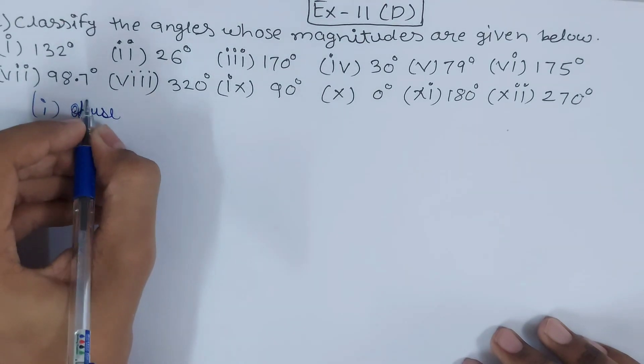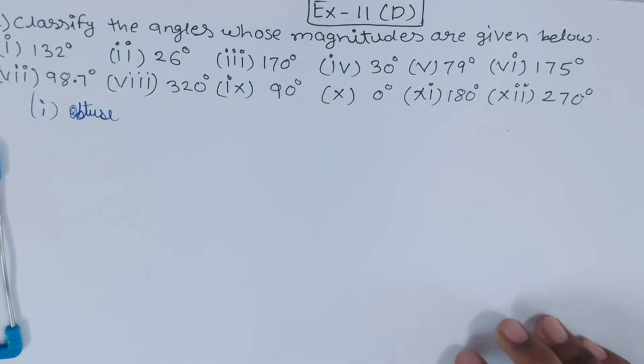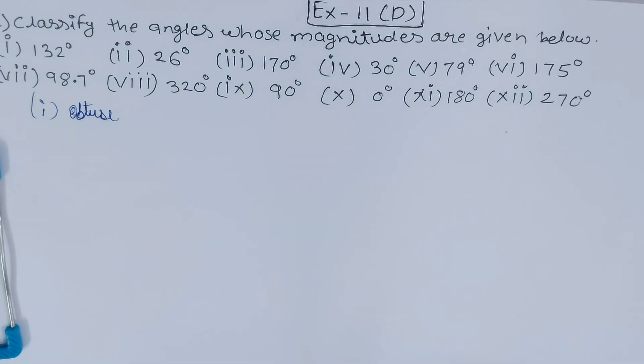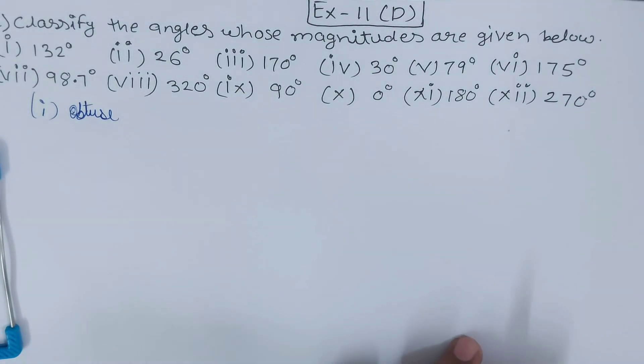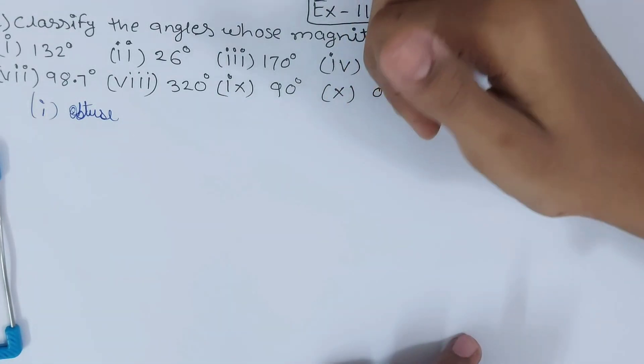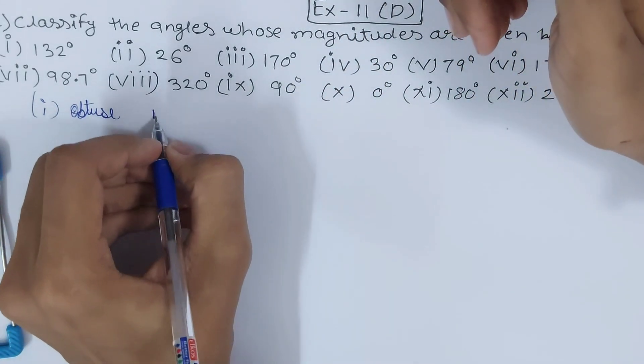Then we have 26 degrees. 26 degrees is less than 90 degrees, so whatever is less than 90 degrees that will go under the category of acute.